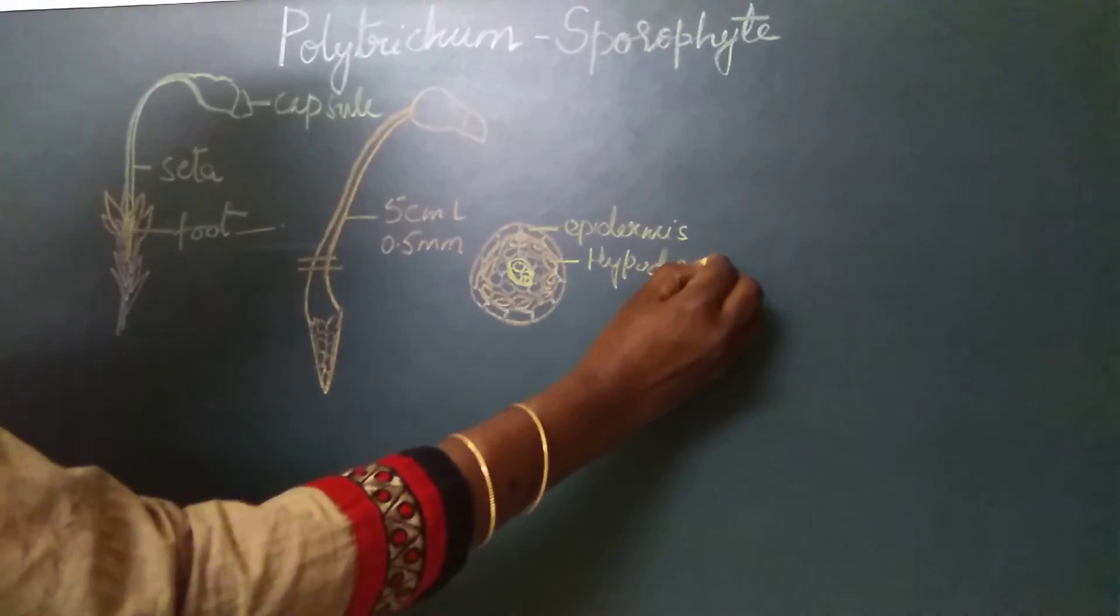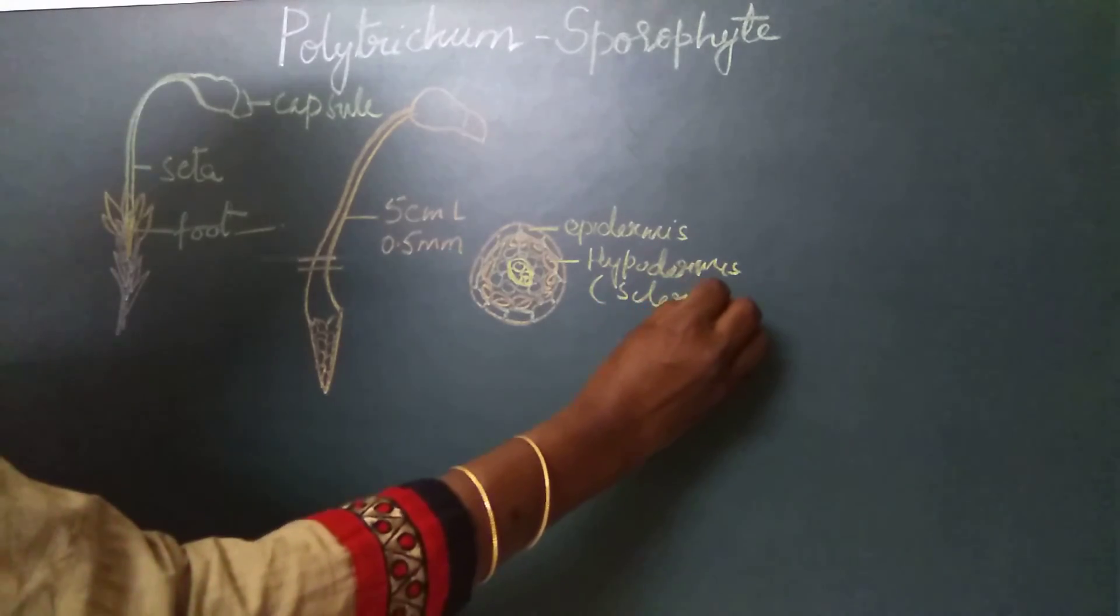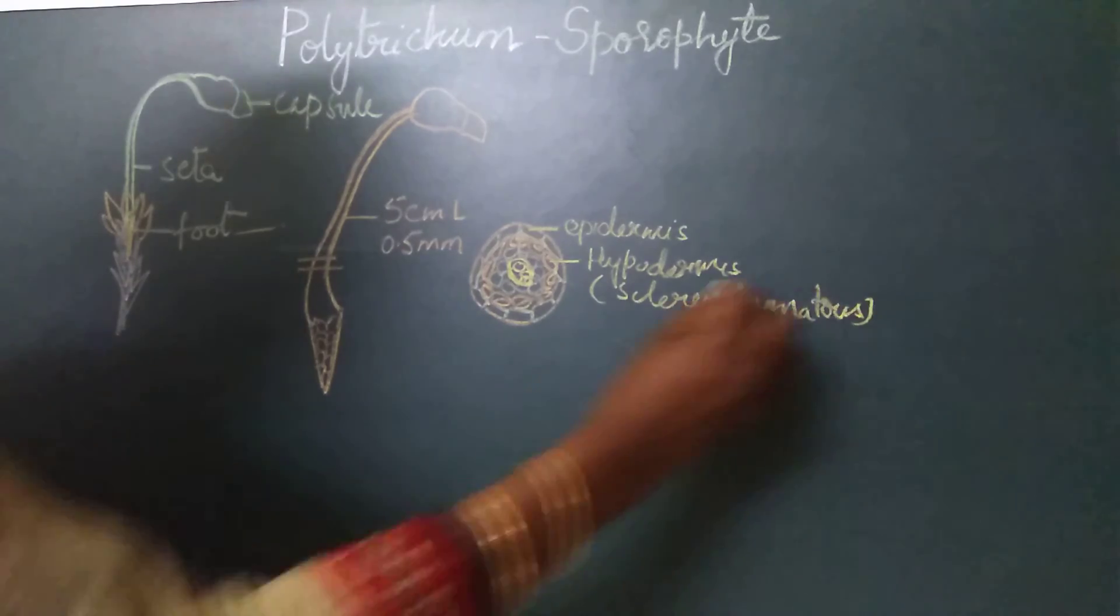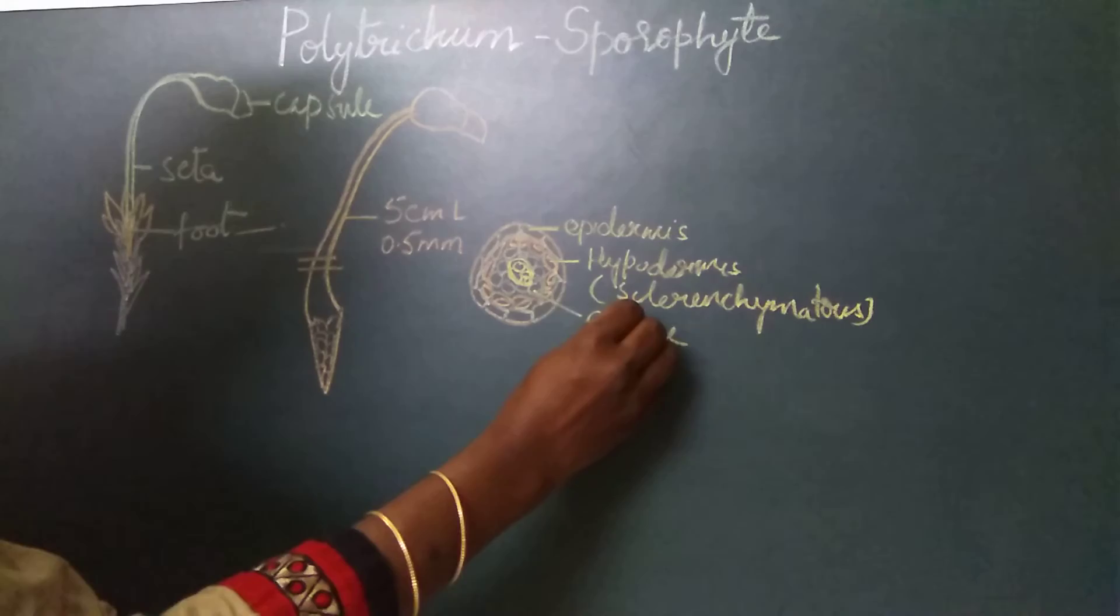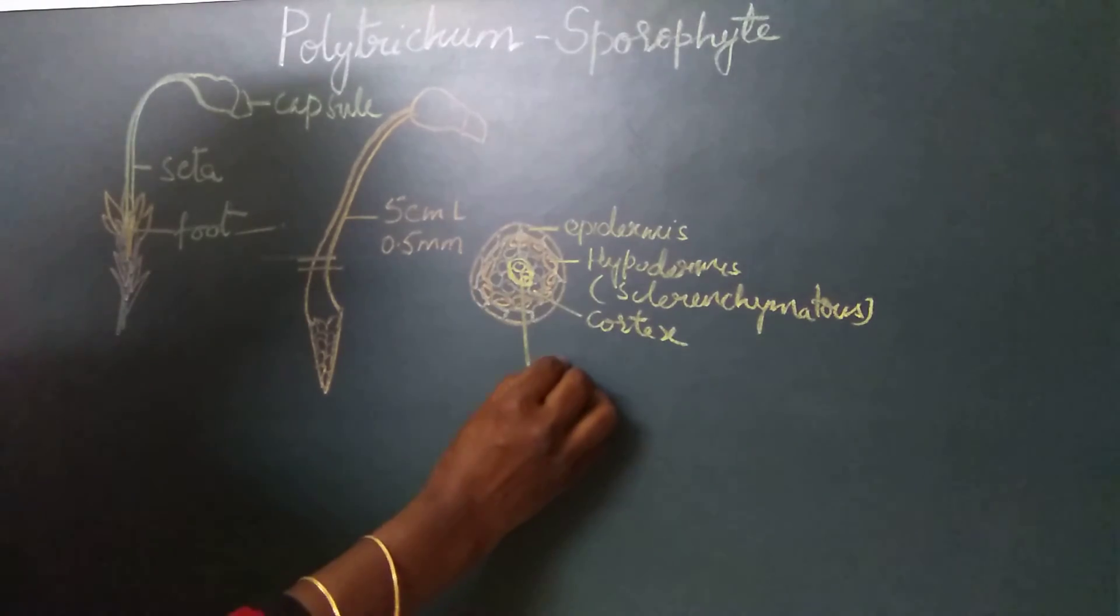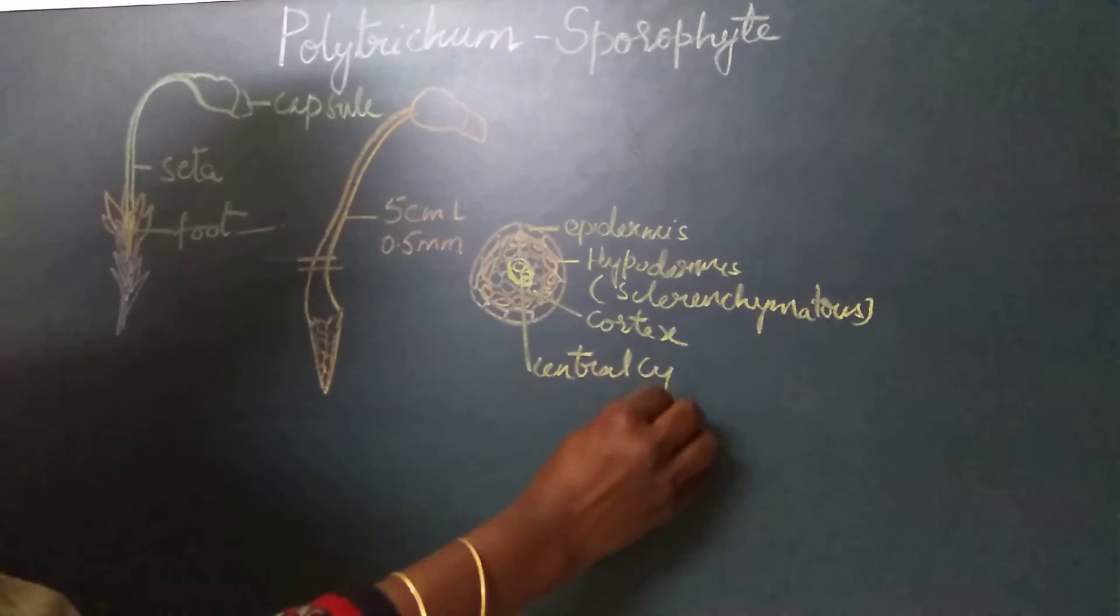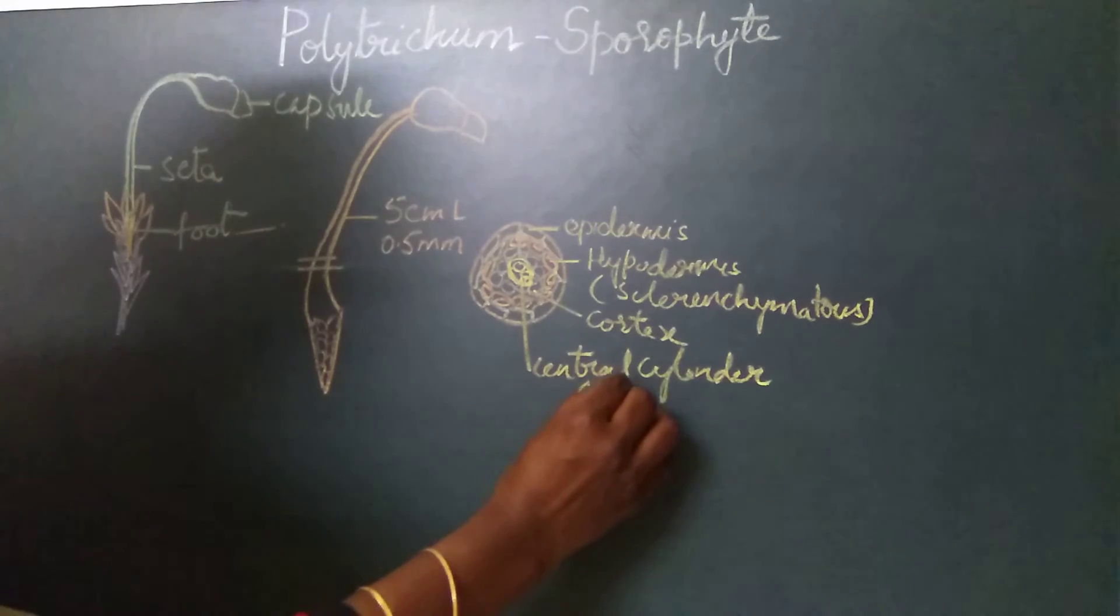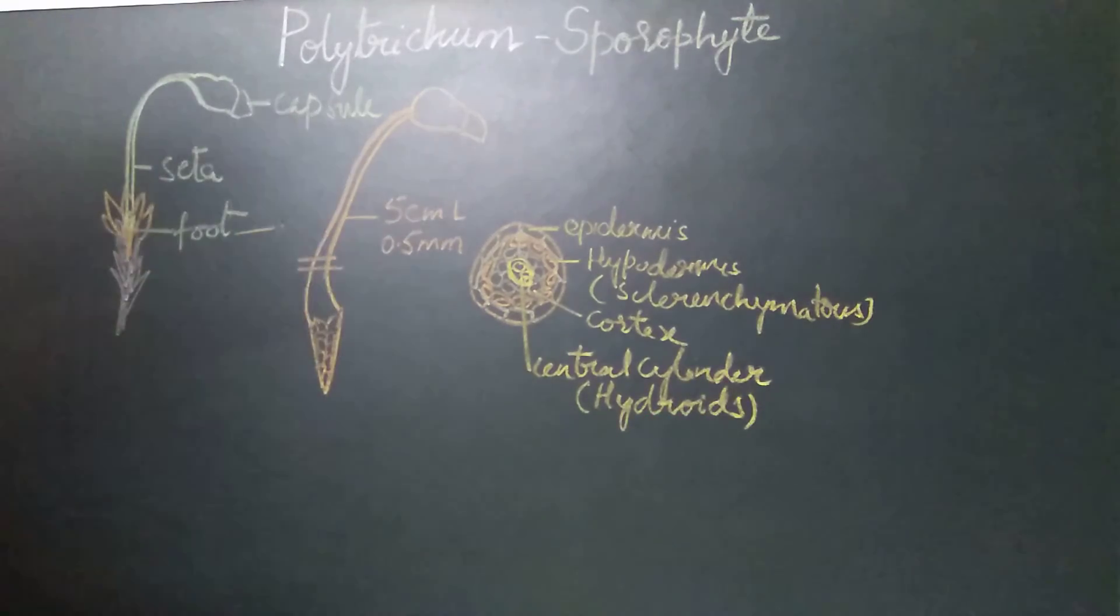The hypodermis is sclerenchymatous. Then is the general cortex and the central cylinder. The central cylinder has cells called hydroids which help in conduction of water.